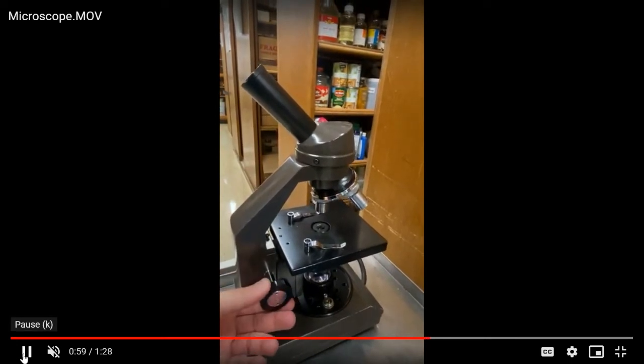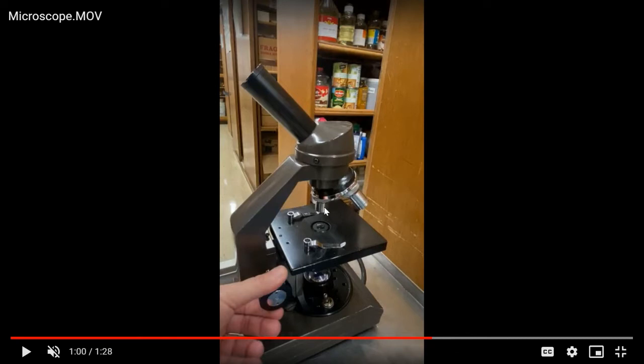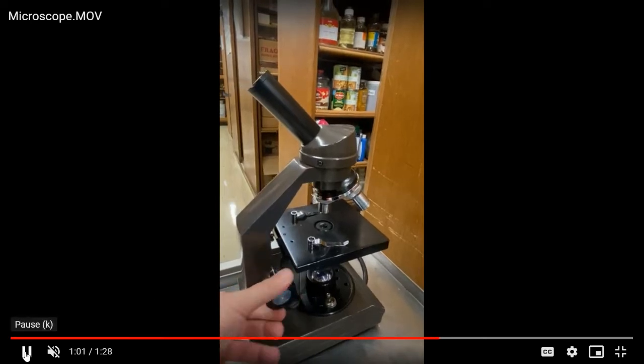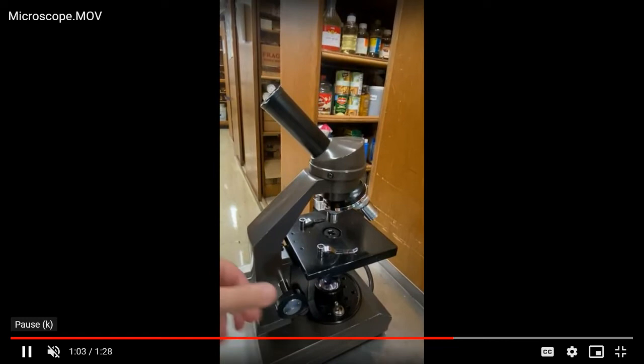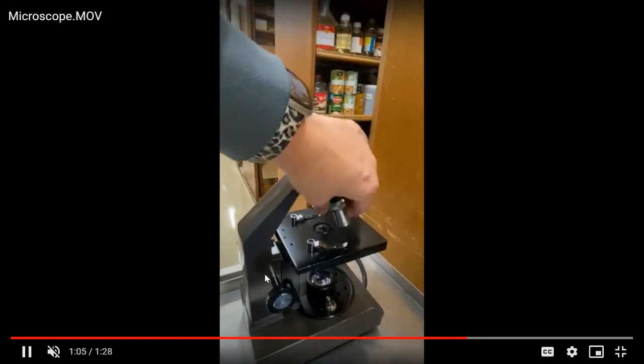You are always going to start off trying to find something in the microscope under low power. Low power is the shortest one here. It has a magnification of 4x. You'll use the course adjustment in order to bring the stage up and down to get things into view.